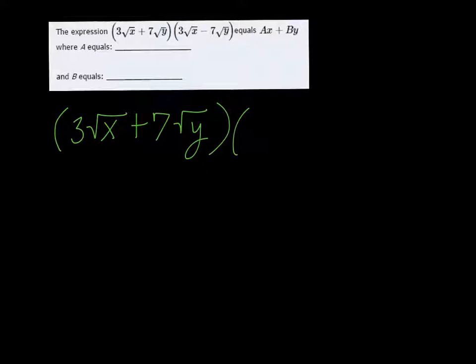FOIL stands for First, Outer, Inner, Last. So the first terms get multiplied together, then the outside ones, then the inner, and then last.